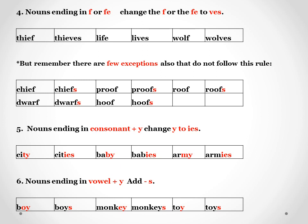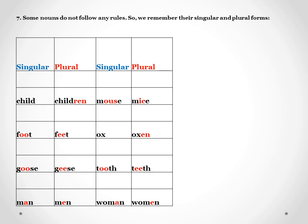Next, we will see some nouns which don't follow any rules. The singular of child is child and the plural will be children. Mouse becomes mice, foot becomes feet, ox becomes oxen. So they don't follow any rules.